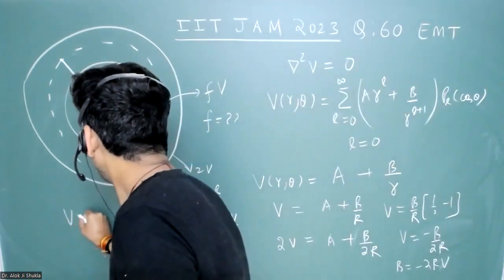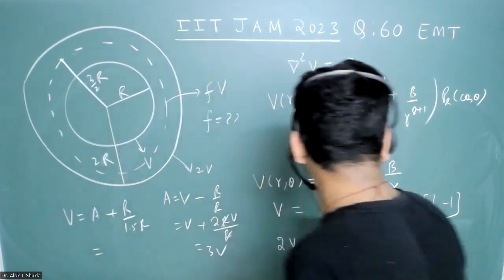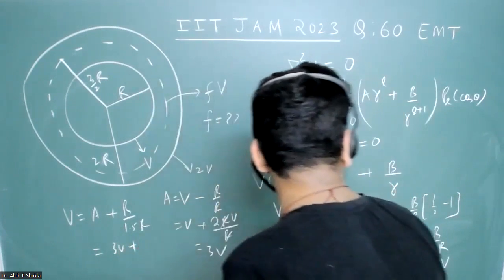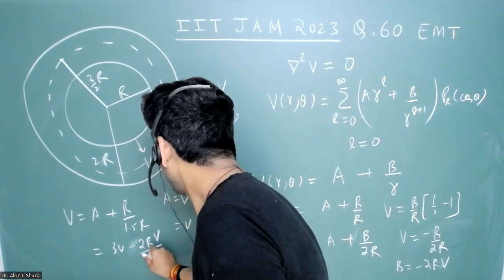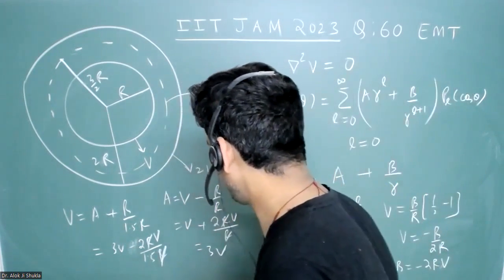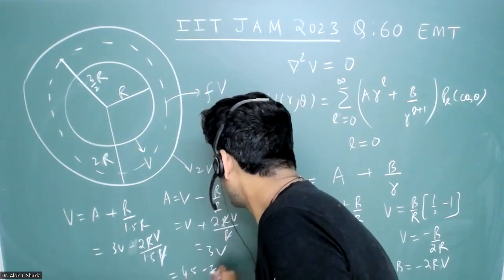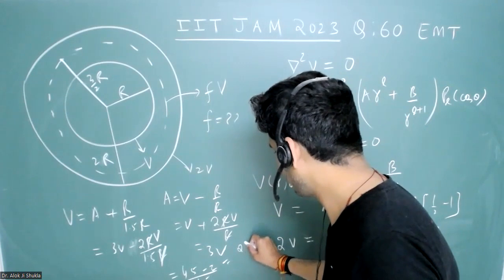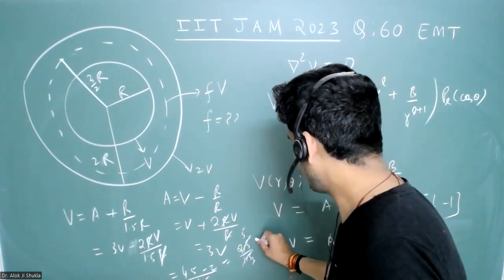Now if you want to write potential at 3/2r, it will become V equals a plus b/1.5r, which is equal to 3v plus (minus 2rV)/(1.5r). r and r got canceled. You can solve it now. So 3 times 1.5 will give you 4.5 minus 2 by 1.5, which is equal to 2.5 over 1.5. So it is just 5/3v.